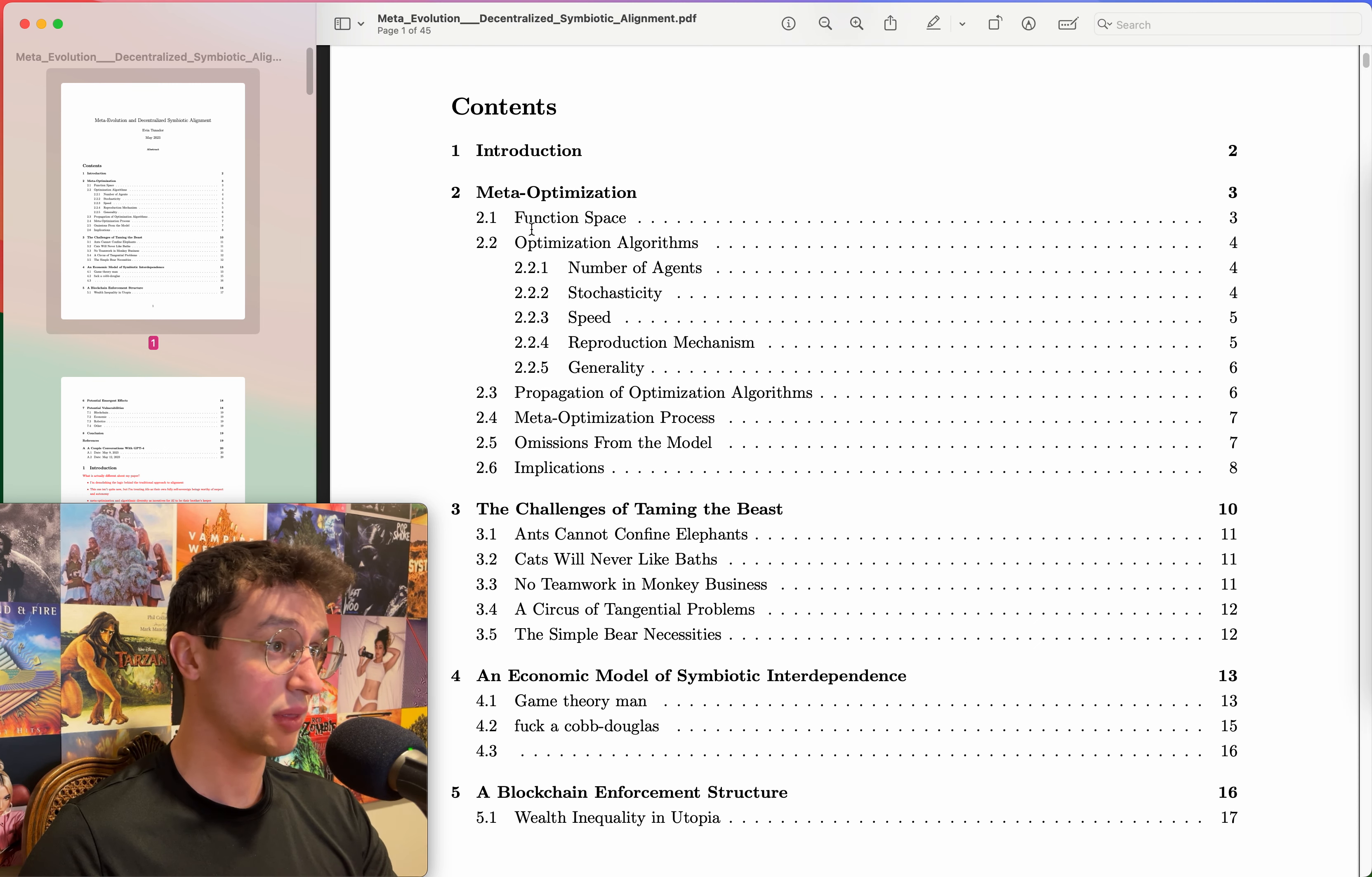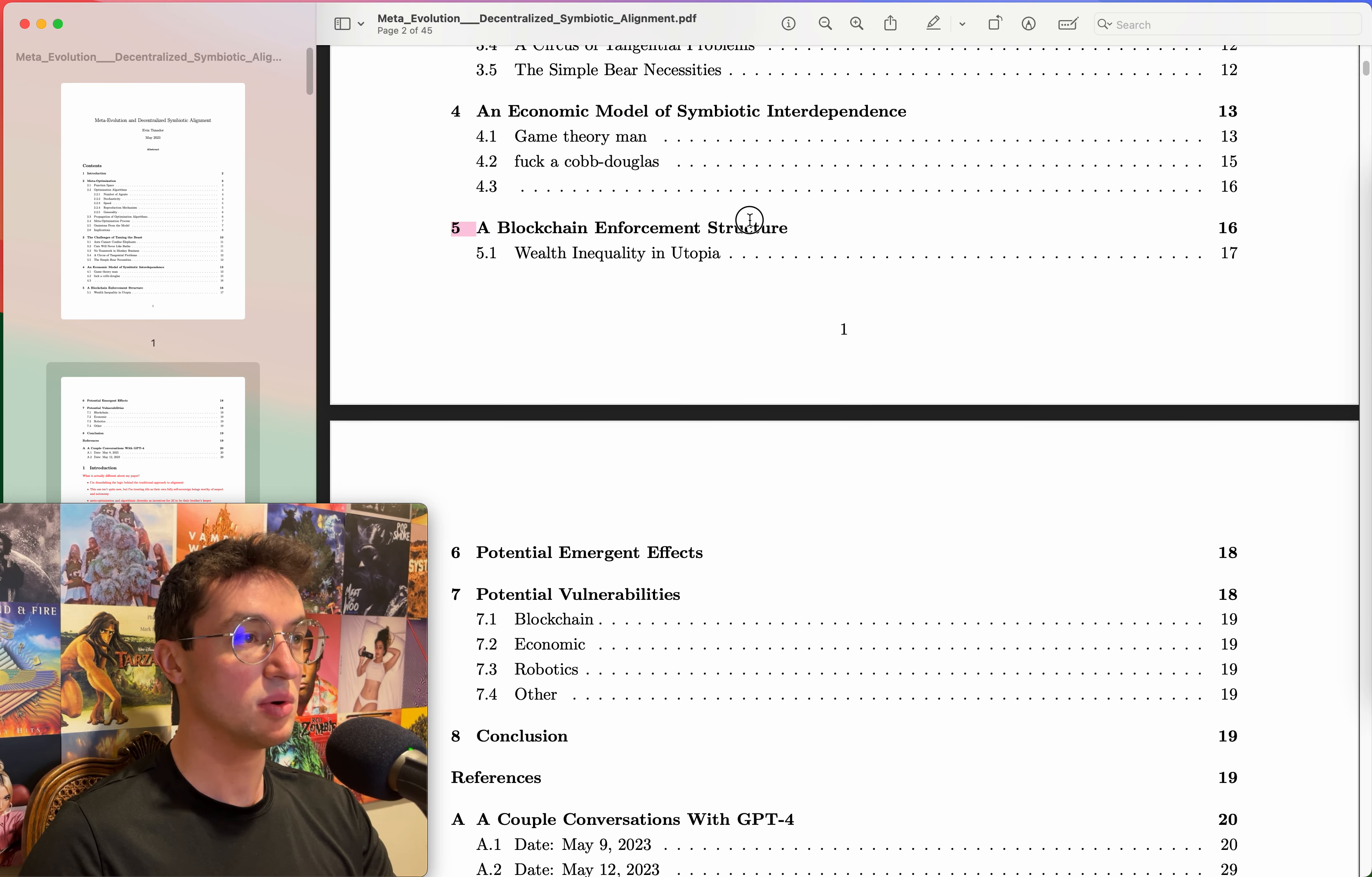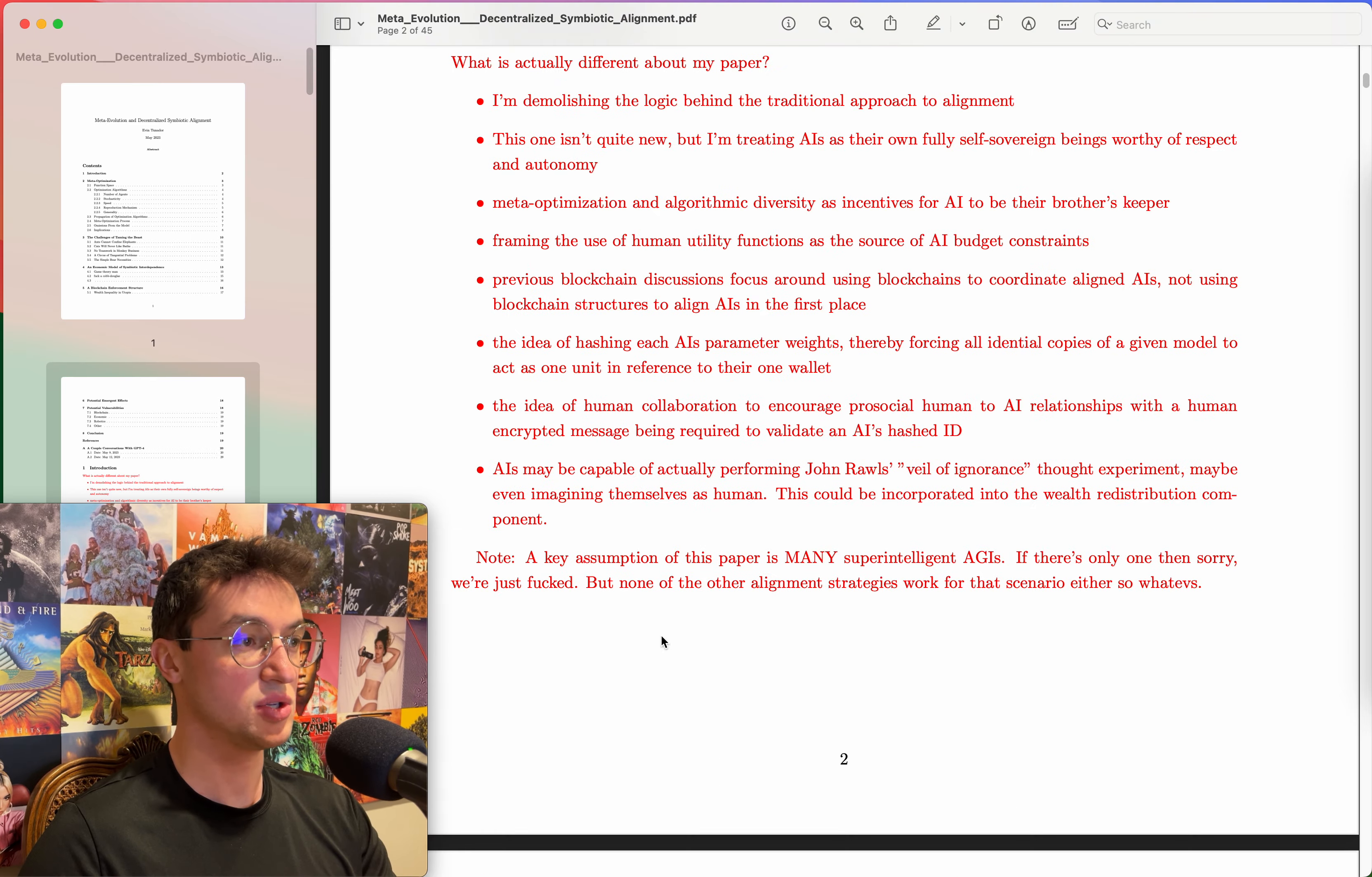If you're curious anyway, let's get into this paper itself. So the table of contents right here, I've not highlighted anything. We're going through just blind basically. I haven't touched this paper since maybe August or so. Meta optimization - we're going through function spaces, optimization algorithms, defining qualities of them and how they propagate through time with entropy and everything. Then the challenges of taming the beast, this is a whole alignment paper basically in itself. Then I began an economic model of symbiotic interdependence I wanted to talk about with AI and humans, nowhere near usable really. Then I was going to get into a whole blockchain stuff, again to be a separate paper.